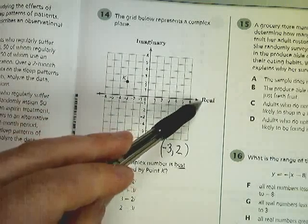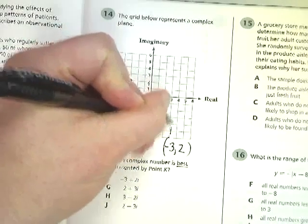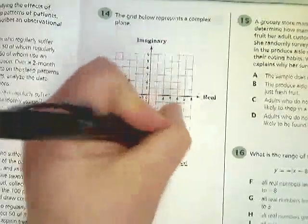So in this case, I've got the real axis as the x, so my real value is negative 3, which means it's just a number. Whereas 2, my y, represents my imaginary.